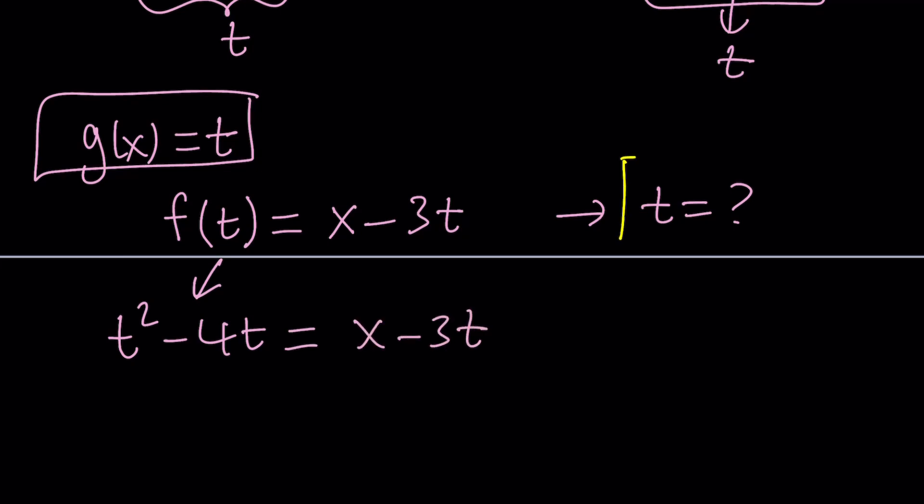Let's go ahead and substitute that here. t squared minus 4t, for f of t. And that is equal to x minus 3t. Again, what's our goal? To solve for t. So from this equation, let's go ahead and isolate t. We can put everything on the same side, which is better. Bring this over here by adding 3t. So if you add 3t to this, you're going to get t squared minus 4t plus 3t, which is t squared minus 1t. Or you can just write it as t. And that's equal to x, but I'm going to subtract x from both sides and put everything on the left.